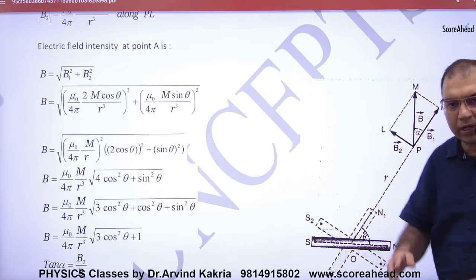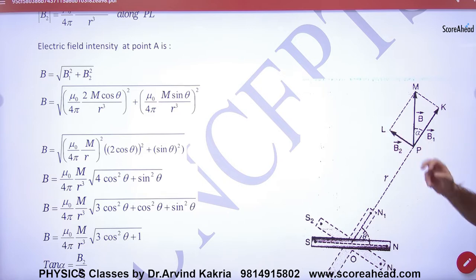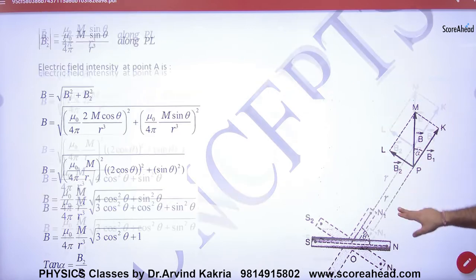We had to draw the same diagram. Remember it was B-axial, it was B-equatorial. And what was the net answer? Square root of B-axial and B-equatorial.